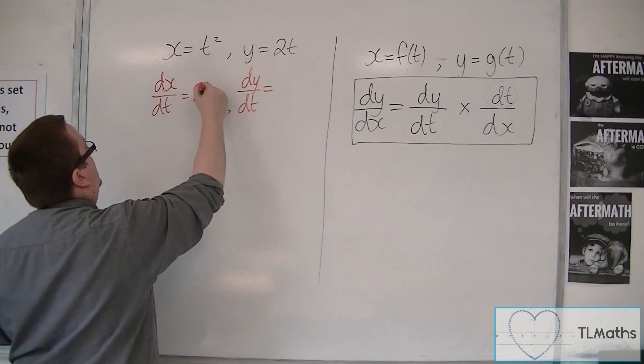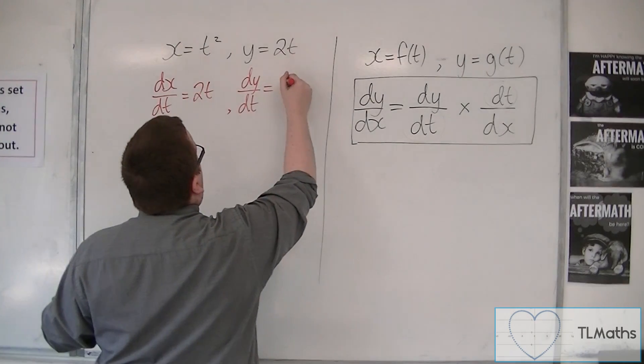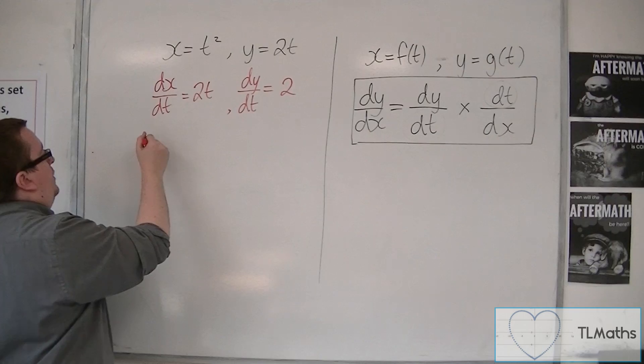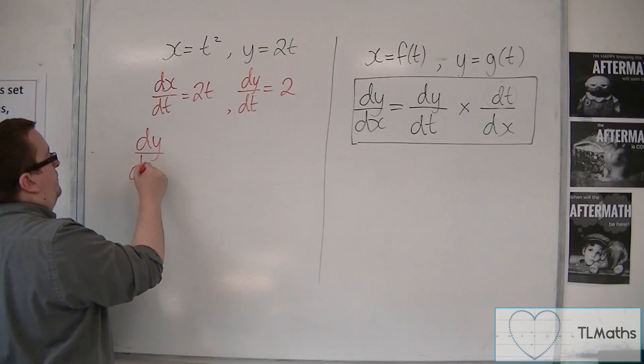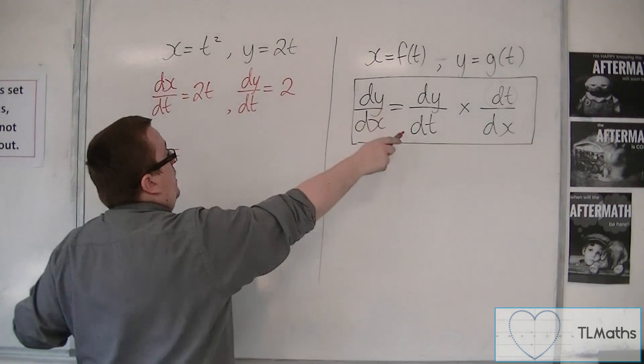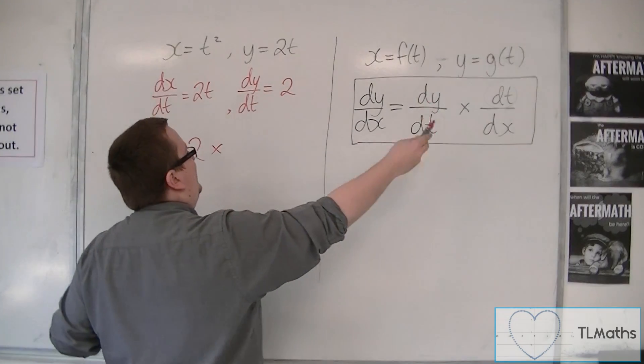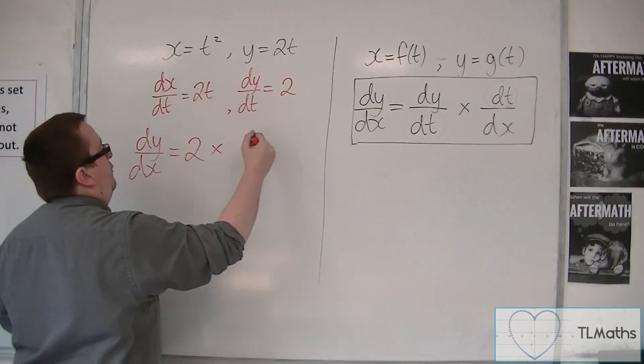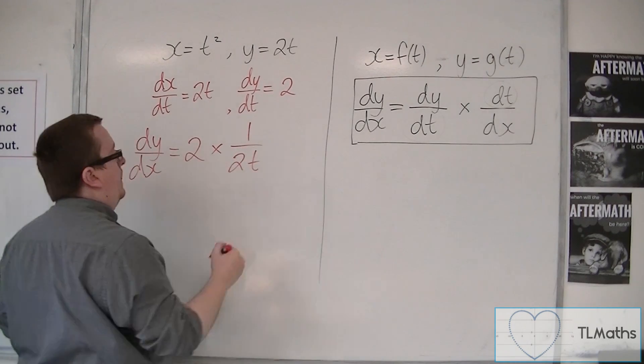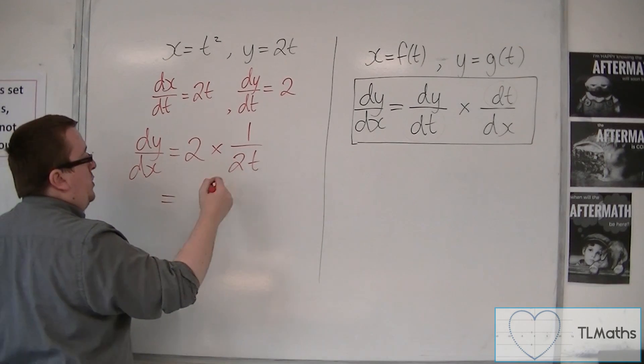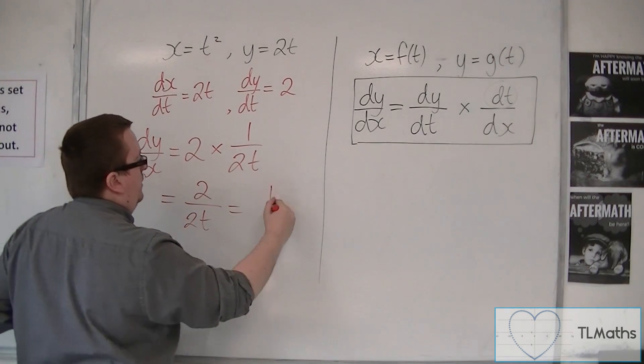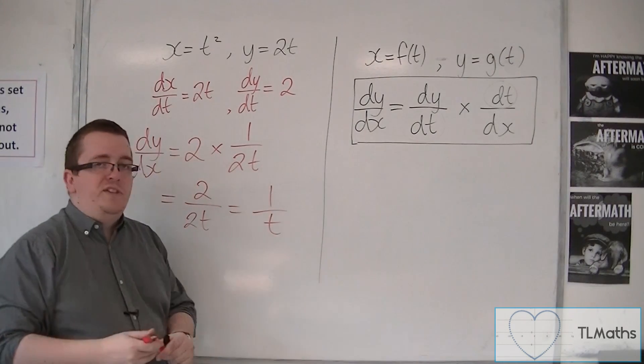dx/dt is 2t, and dy/dt is 2. So dy/dx is equal to dy/dt, which is 2, times dt/dx, so 1 over 2t. And that is 2 over 2t. The twos cancel, and you just get left with 1 over t.